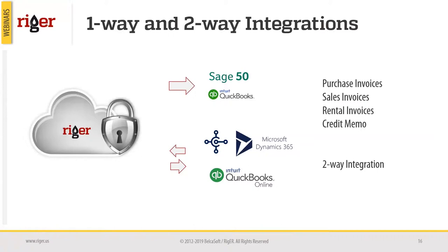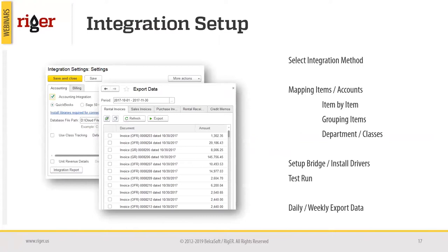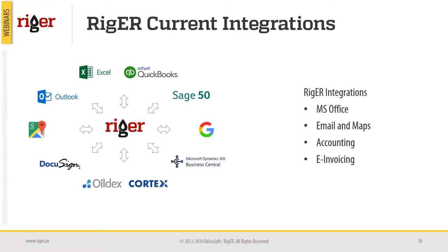That kind of situation we call two-way integration — when there's no primary system and both systems work as a fully synchronized integrated pair. The integration setup in RIGOR is a developed process: we select the integration method, map items in RIGOR and in the accounting system, set up a bridge, install drivers and triggers, do a test run, and then enjoy daily or weekly data export. Right now we have 11 integrations with RIGOR.